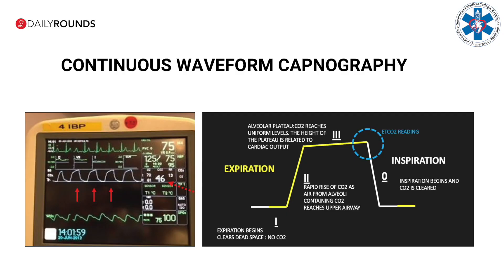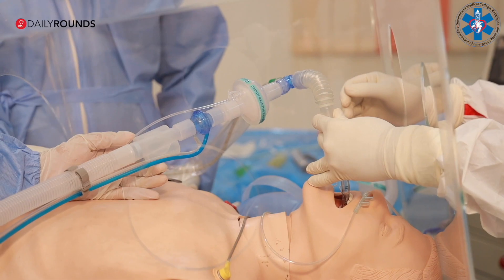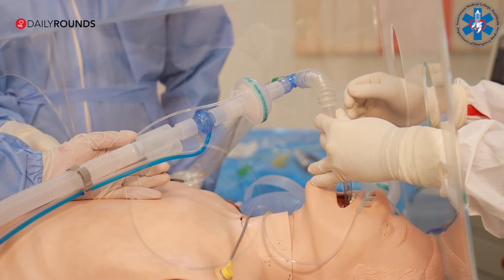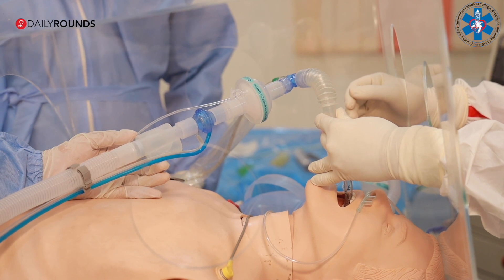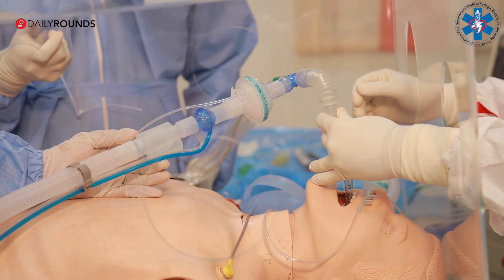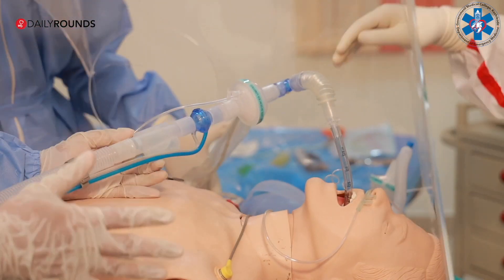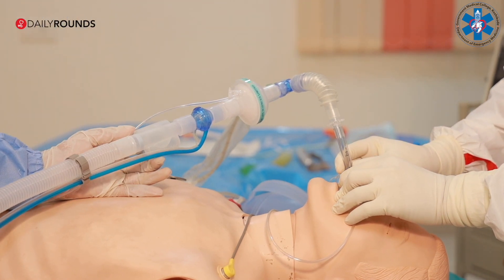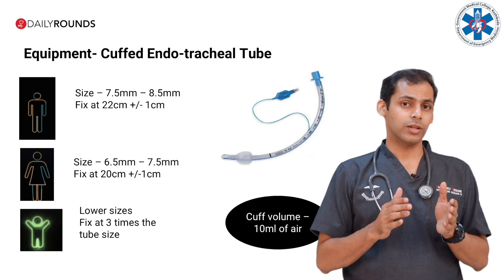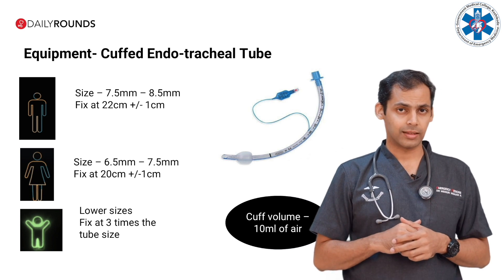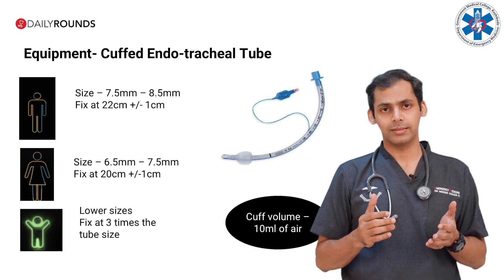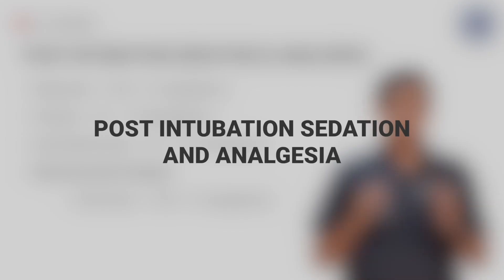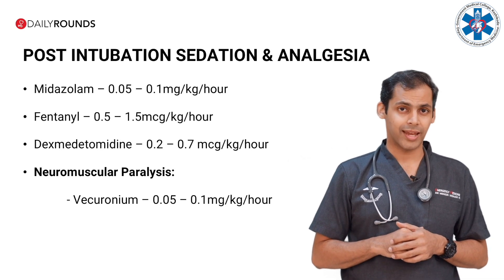Continuous waveform capnography is recommended to confirm tracheal tube position. Bedside ultrasound may also be used. Exclude bronchial intubation by 5-point auscultation or chest X-ray. Carefully remove the aerosol box after this. The ET tube should be fixed at about 20–21 cm in females and about 23 cm in males.